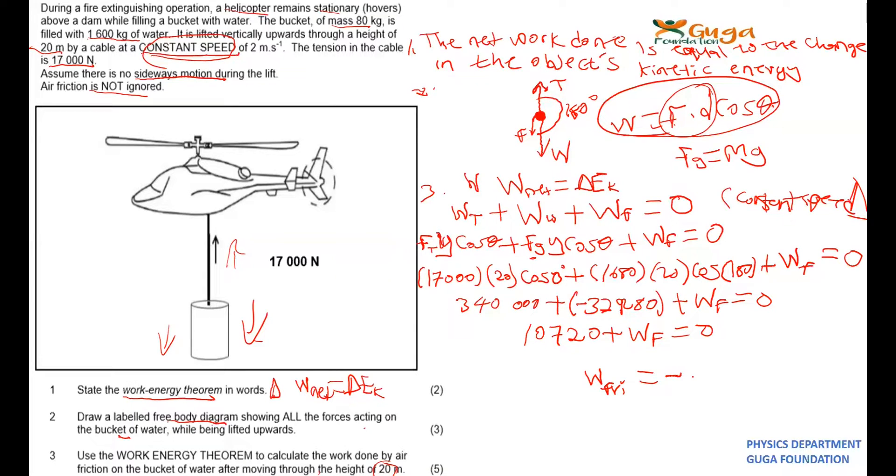So your work done by friction, you should get negative 10,720. Okay, so this is the work done. Thank you.